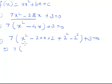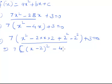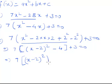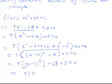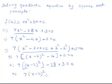Now, 7 times the first, second, and third term together — these three terms can be written as (x - 2)² minus 2 times 2 is 4. It can be written as: 7 times (x - 2)² minus 4, plus 3 equals 0. So 7 times 4 is 28, giving 7(x - 2)² - 28 + 3 = 0.